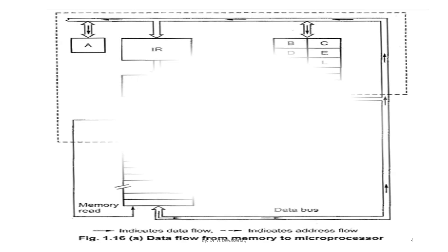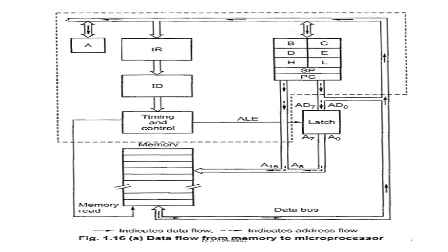Data flow from memory to the microprocessor is represented here. This diagram represents the memory read machine cycle of the 8085.